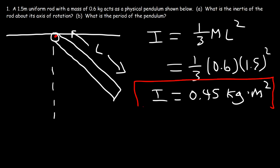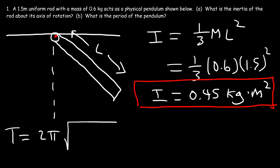Now let's move on to Part B: what is the period of the pendulum? The period of the pendulum is 2π times the square root of the inertia divided by the mass times the gravitational acceleration times D. D is the distance between the axis of rotation and the center of gravity.